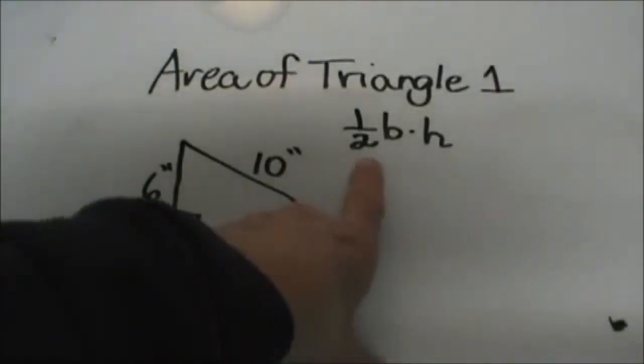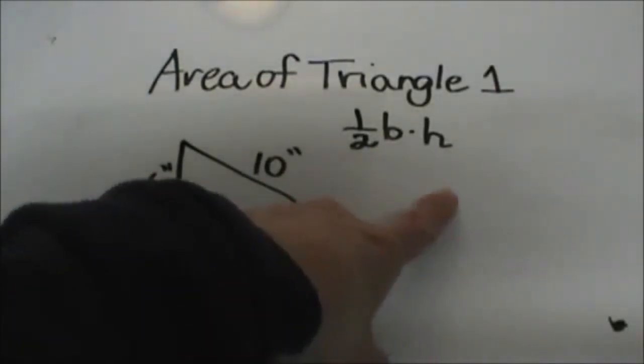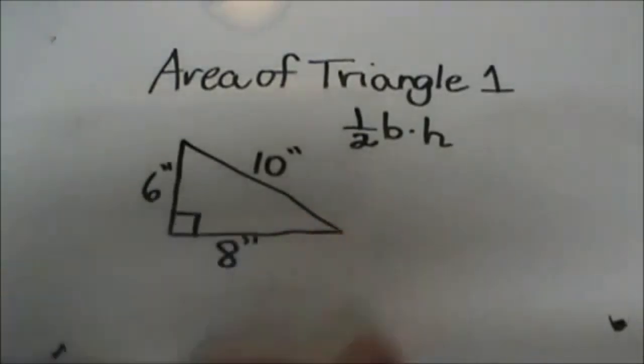The formula to find the area of a triangle is 1/2 the base times the height. We need to know the base and the height to plug into the formula.